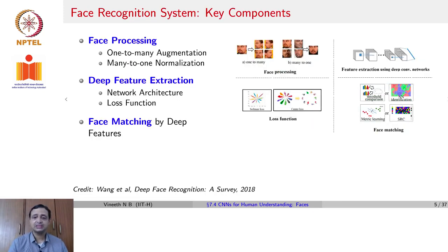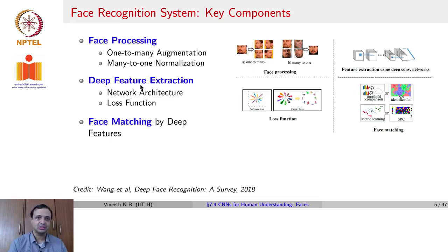The key components are face processing, where you could have a one-to-many augmentation or a many-to-one normalization. Then you have deep feature extraction through a network architecture and a corresponding loss function. Finally, you match these embeddings or features or representations using various different approaches.